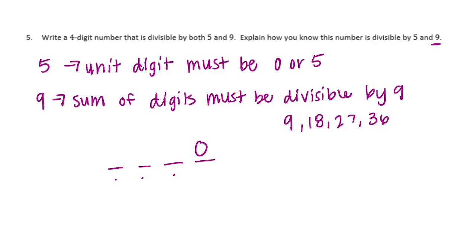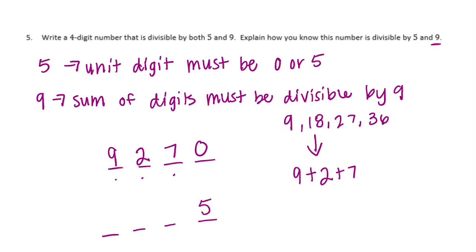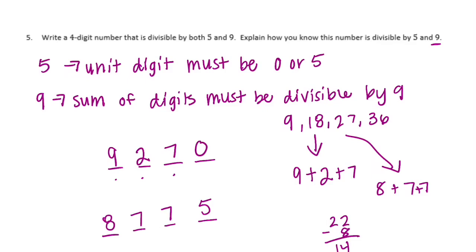Take any three digits that add up to 18: 9 plus 2 is 11, I need 7 more, so we could use 927, giving 9,270. Or if we wanted it to end in 5 with digits adding up to 27: we already have 5, so we need 22 more. Using 8 leaves 14, and 7 plus 7 is 14, so we could use 8,775. You can make up your own number — it just needs to end in 0 or 5, and the digits need to add up to something divisible by 9.